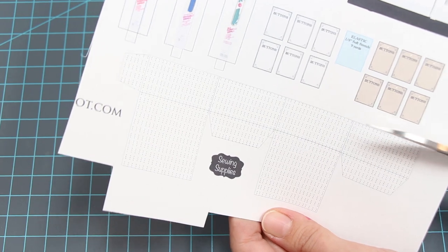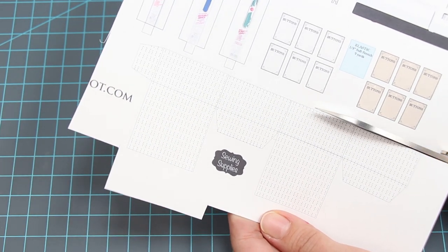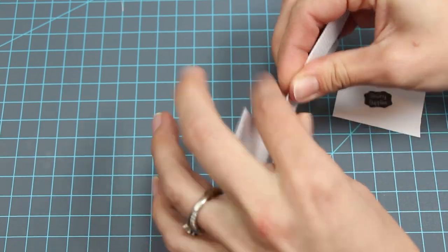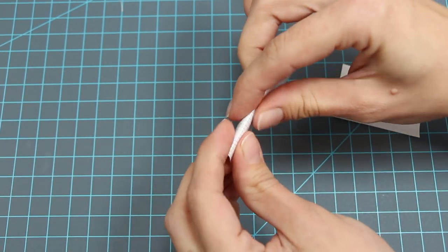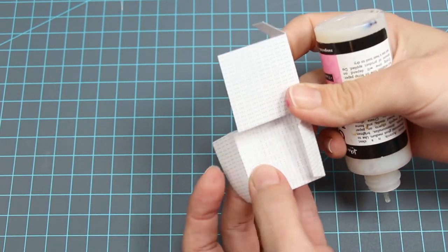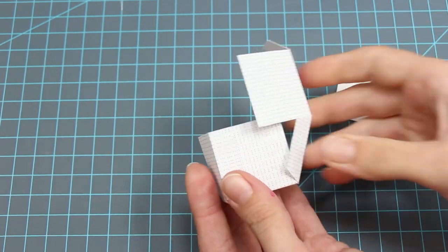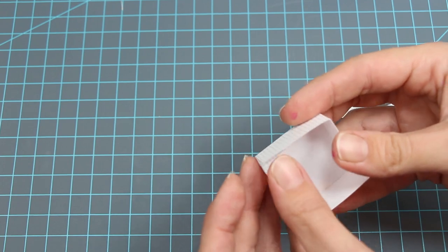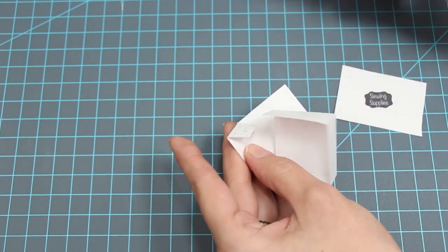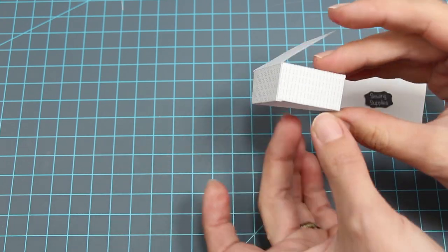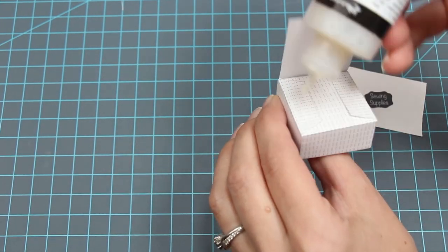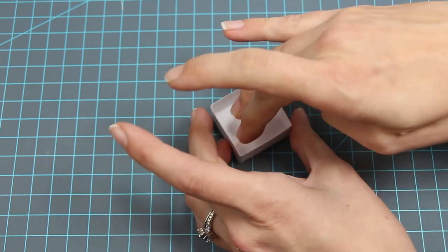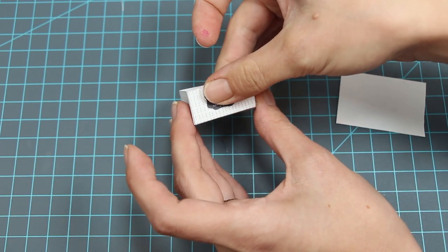Before we make everything else, let's make this little storage box. Cut out the box, fold on the lines, glue it together. Cut out the label and glue it on.